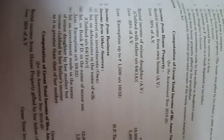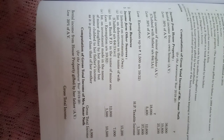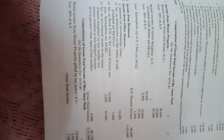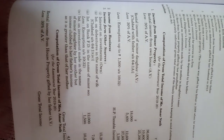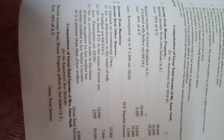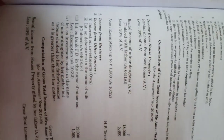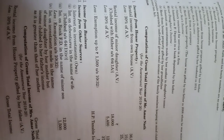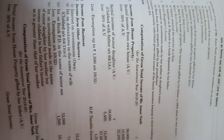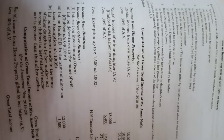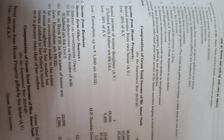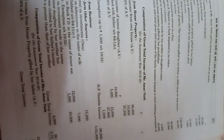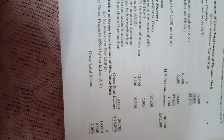Now let us see wife's income. The first component is rental income from house property gifted by her father. Since this property was acquired from her father — not from her husband — the income arising from this property will be considered as the income of the wife only. That income is ₹10,000. In computation of Mrs. Amarnath's income, after standard deduction of 30% of AV as per Section 24A, net income is ₹7,000.